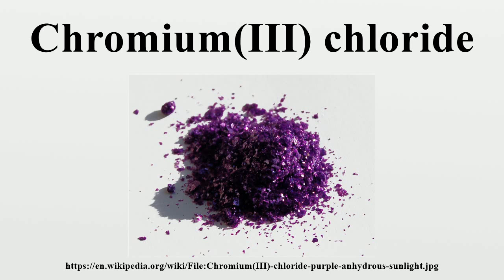Chromium chloride is used as the precursor to many organochromium compounds, for example bischromium, an analogue of ferrocene. Phosphine complexes derived from CrCl3 catalyze the trimerization of ethylene to 1-hexene.